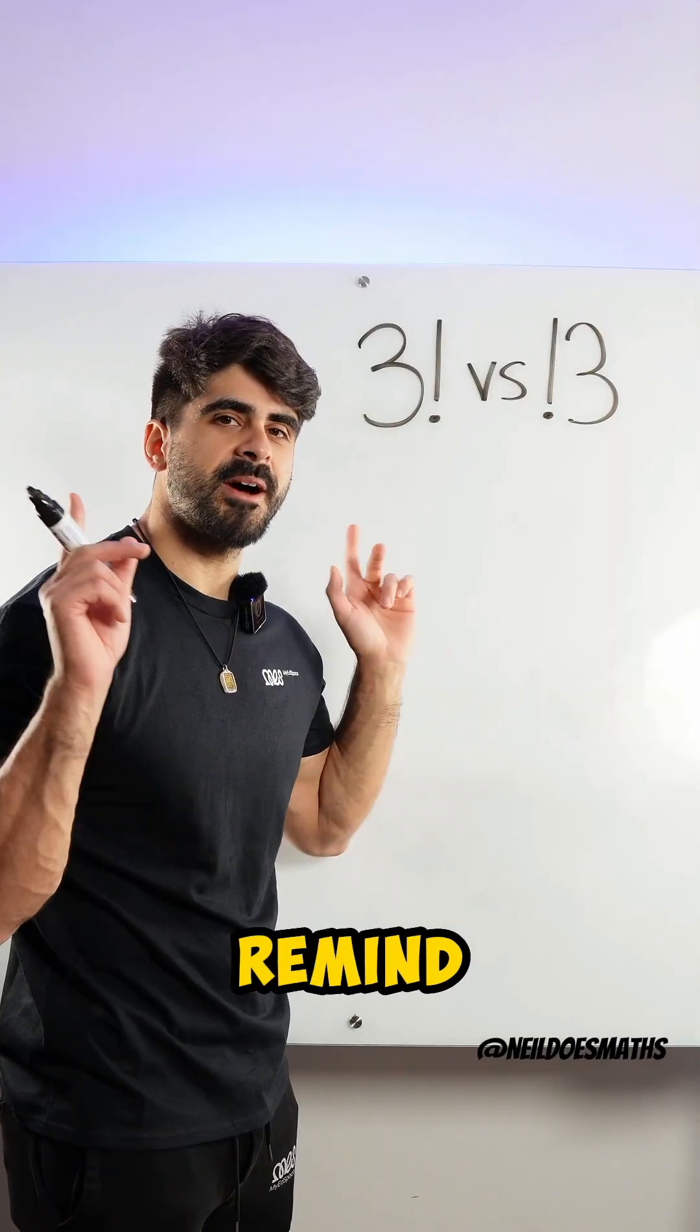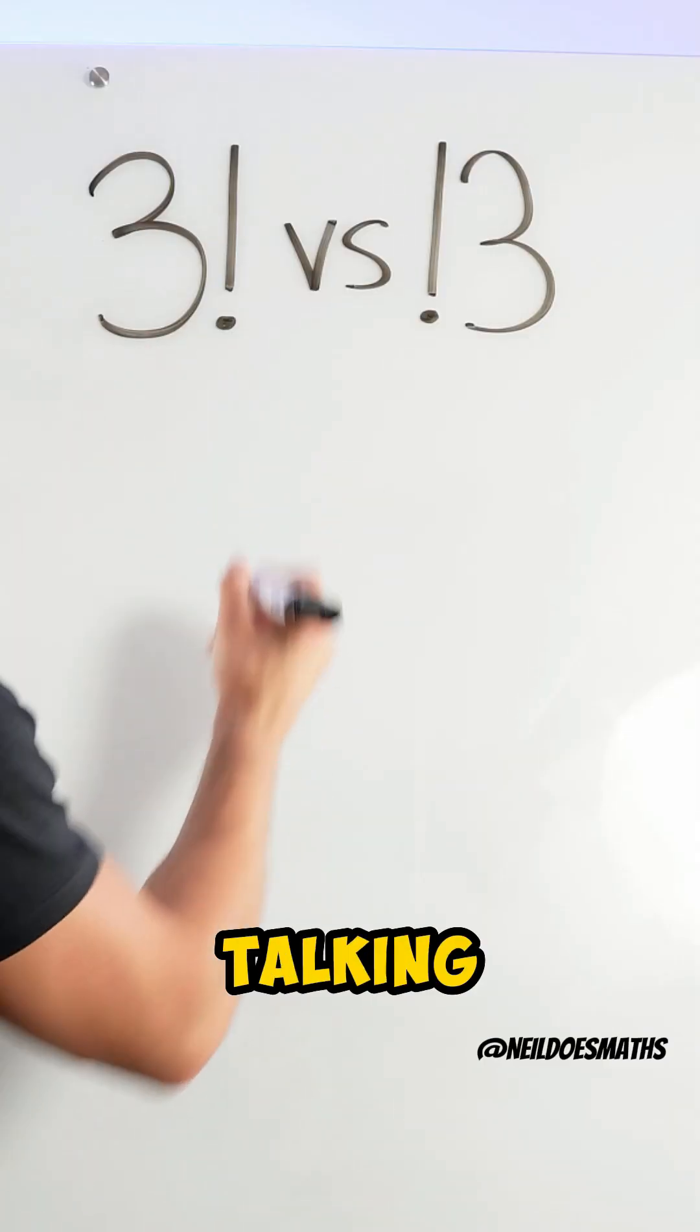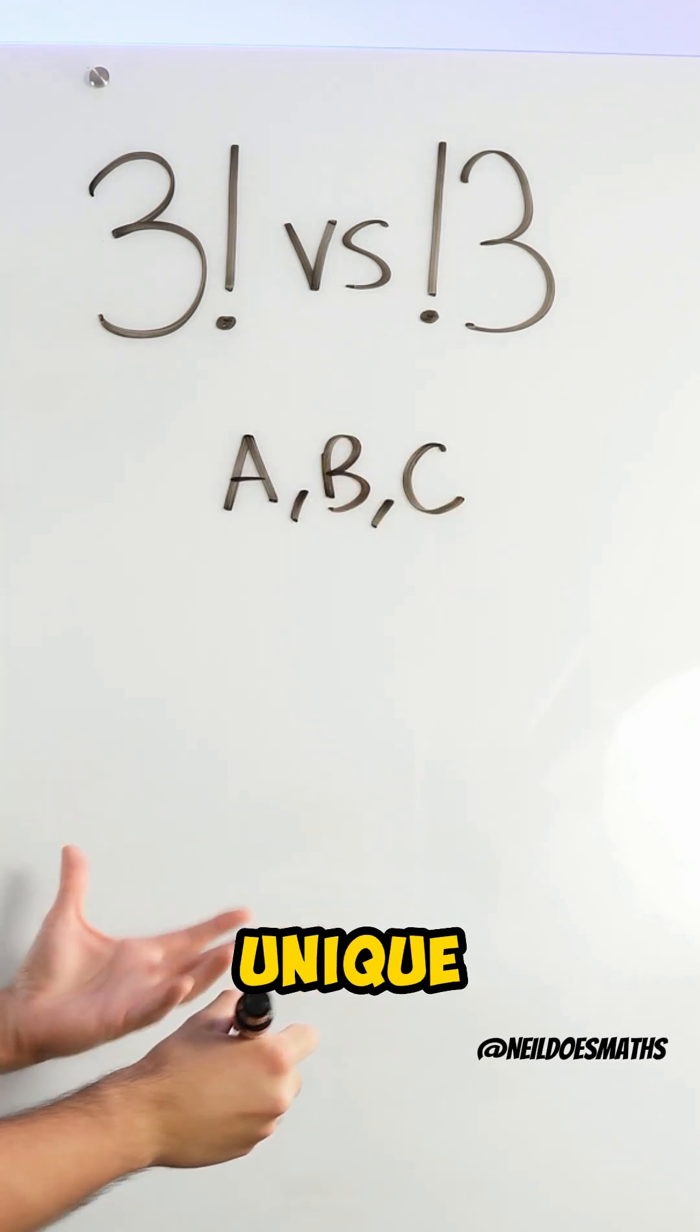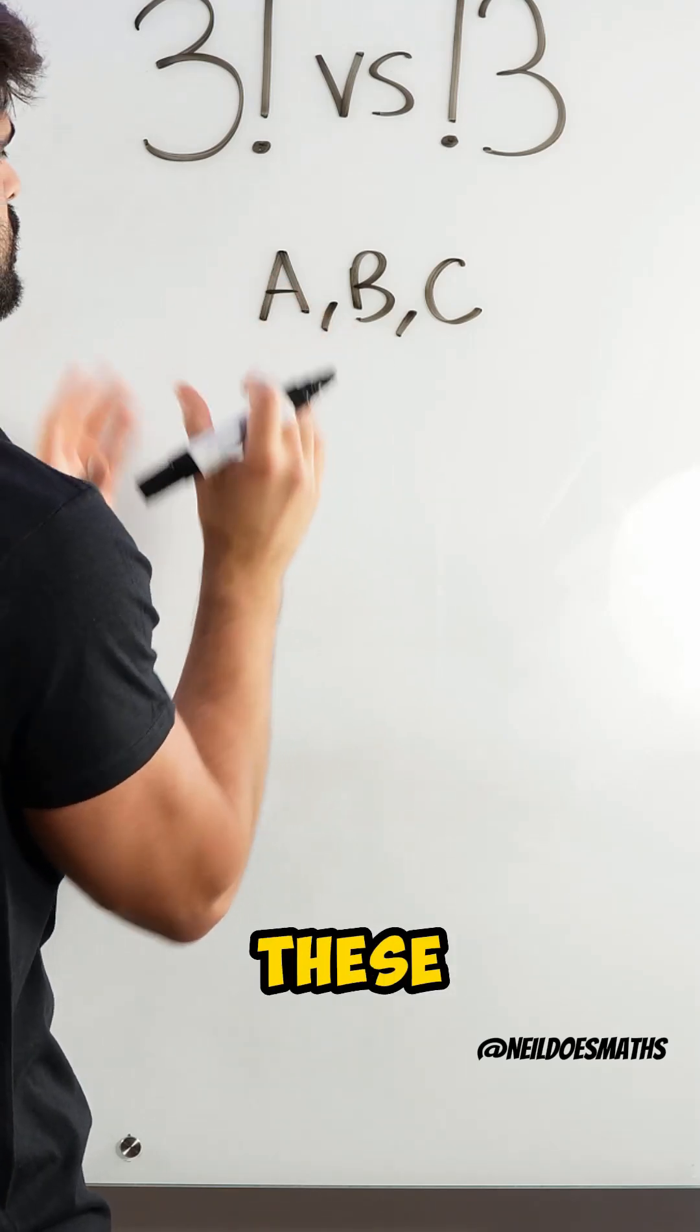Nice. First, let's remind ourselves about 3 factorial. 3 factorial is talking about the number of ways of arranging 3 unique objects. Let's take A, B, C. How many different ways can we arrange these objects?